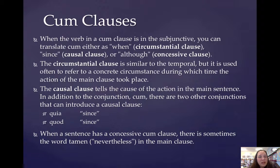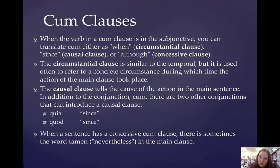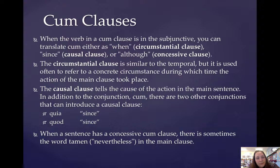When the verb in a cum clause is in the subjunctive, you can translate the cum as 'when' if it's a circumstantial clause, 'since' if it's a causal clause, or 'although' if it's a concessive clause. The circumstantial clause is similar to the temporal clause, except circumstantial clauses will have cum plus a subjunctive verb. It's often used to refer to a concrete circumstance during which the action in the main verb took place. You often see it with a perfect, imperfect, or pluperfect subjunctive, because it's often referring to a circumstance in the past. It translates 'when.'